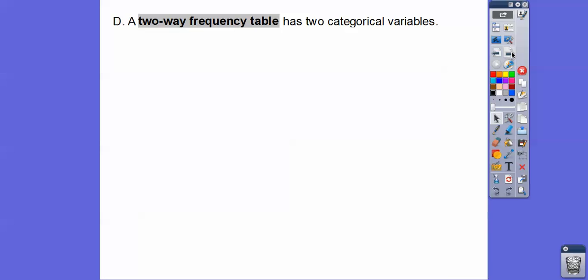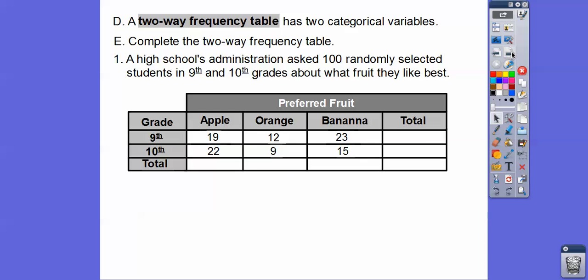Let's go ahead and complete a two-way frequency table. So a two-way frequency table has two categorical variables. So let's complete the two-way frequency table here. A high school's administration asked 100 randomly selected students in 9th and 10th grade about what fruit they like best. So here's the 9th graders who like apples, oranges, and bananas. And here's the 10th graders on apples, oranges, and bananas. And we just got to complete these totals right here.